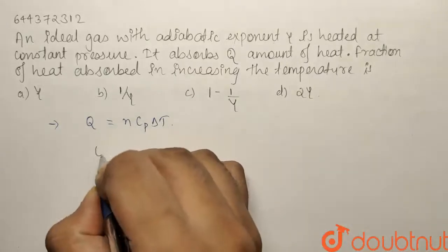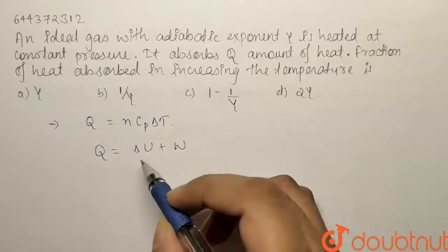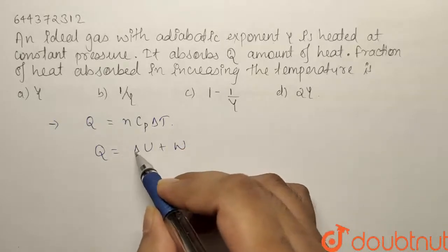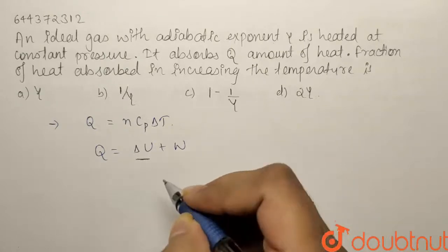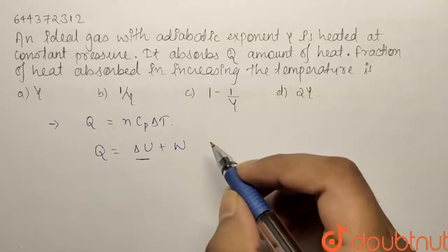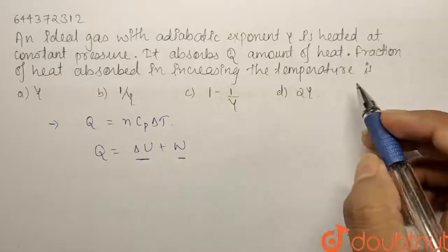Now one thing we know from first law, Q equals ΔU plus W. So the heat we apply, some amount of it is used to change its temperature, that is, change its internal energy, and some amount of it is being used to perform some external work, that is work done.